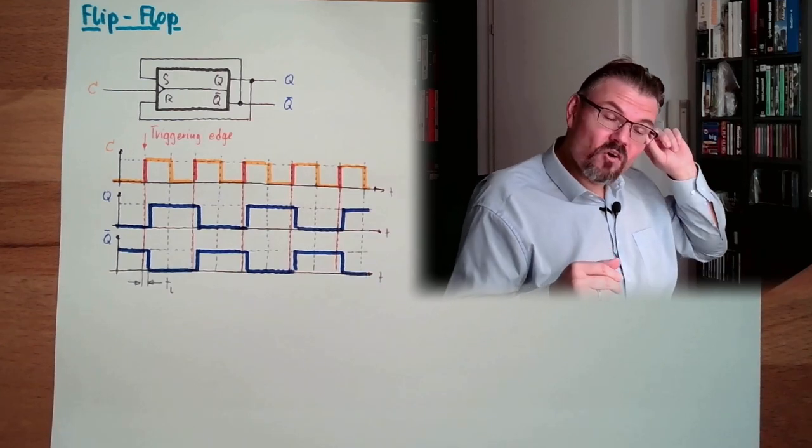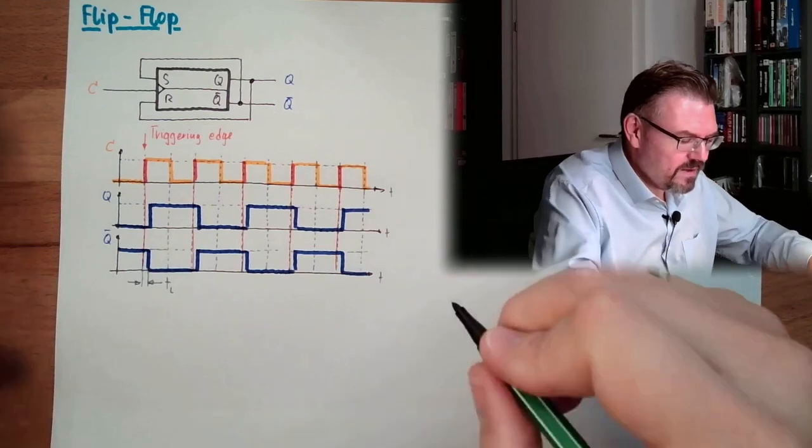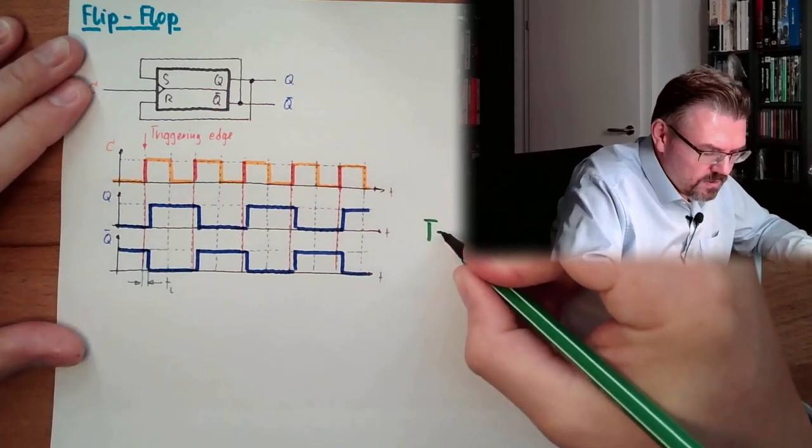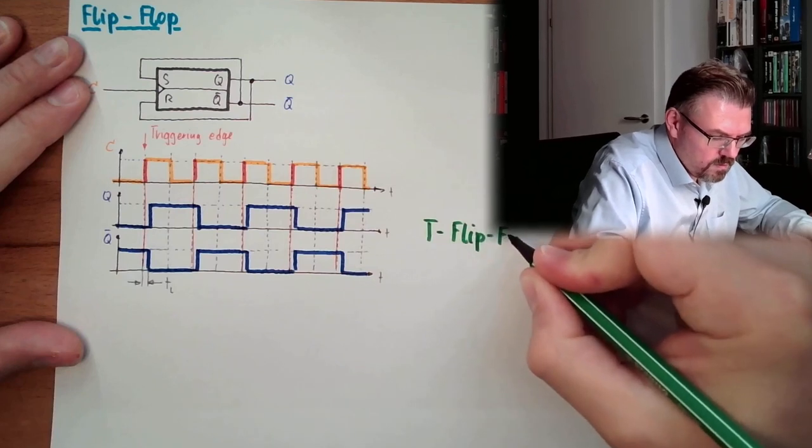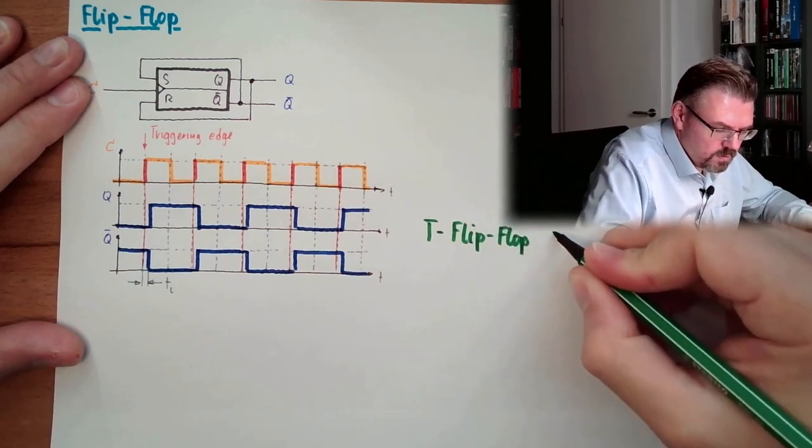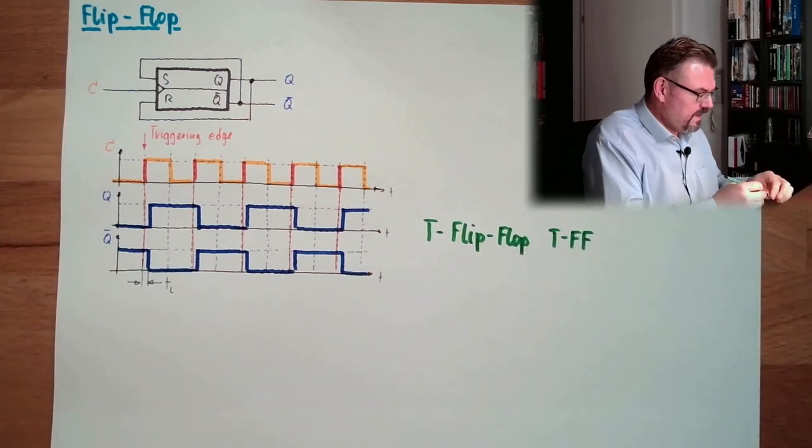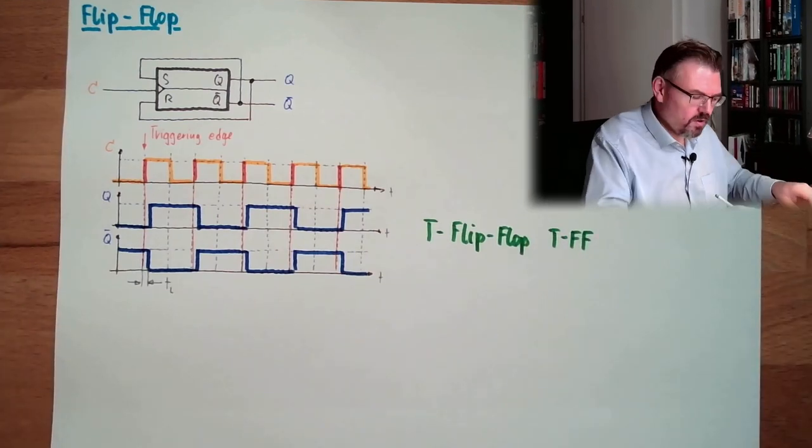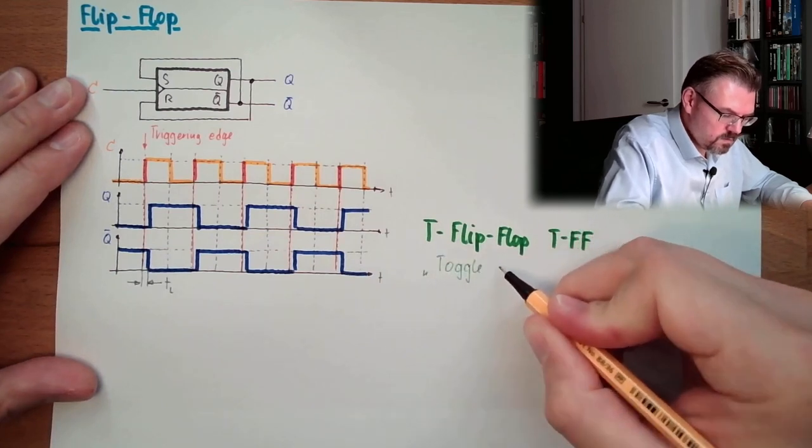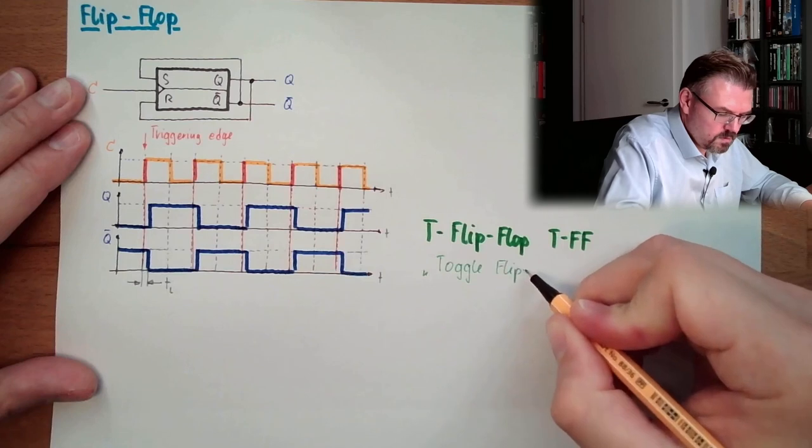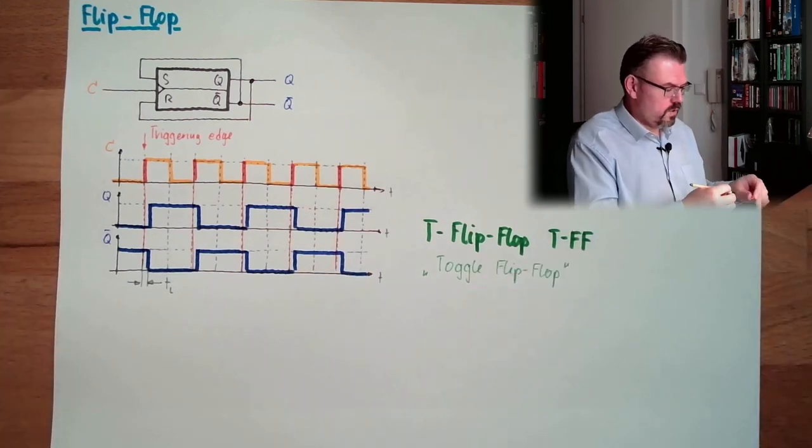The output is toggling, right? The output is toggling. This is why the name is also called T-Flip-Flop. Or TFF, also often used. And this T means toggle flip-flop. That's it.